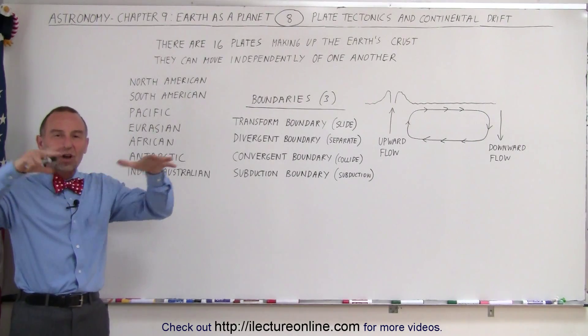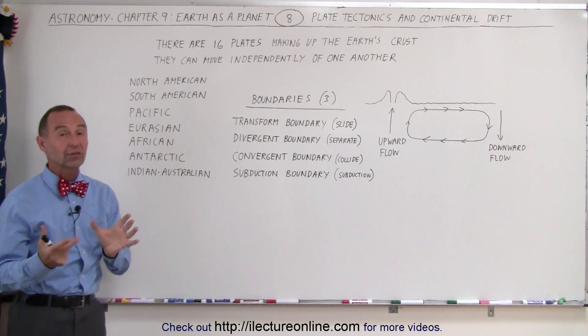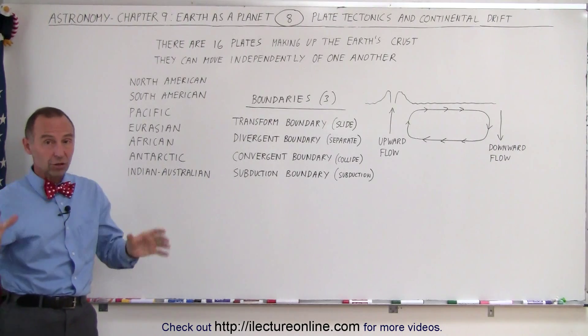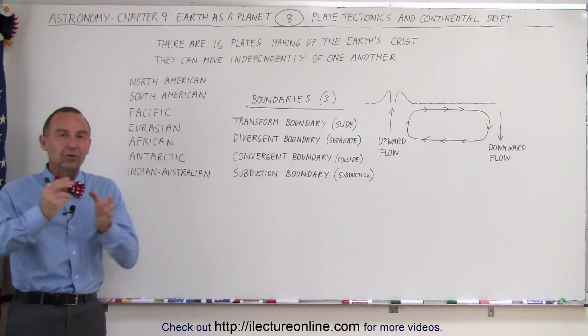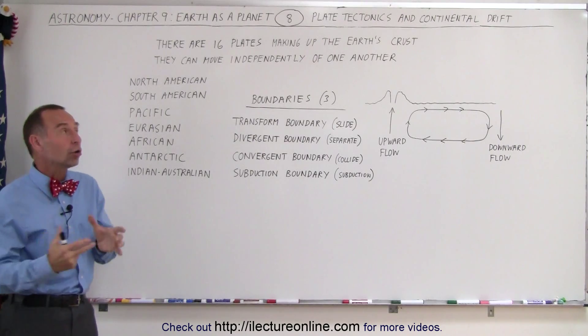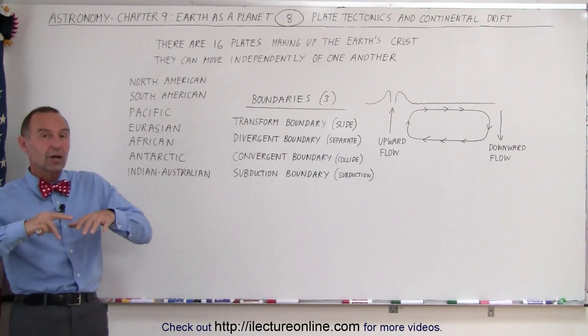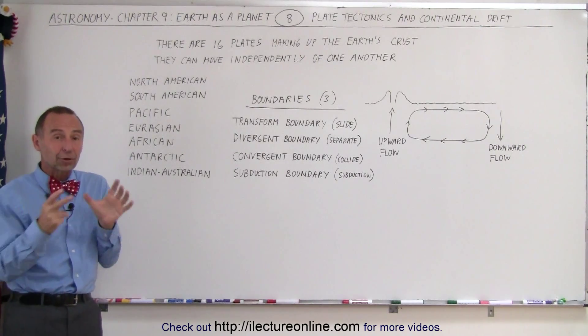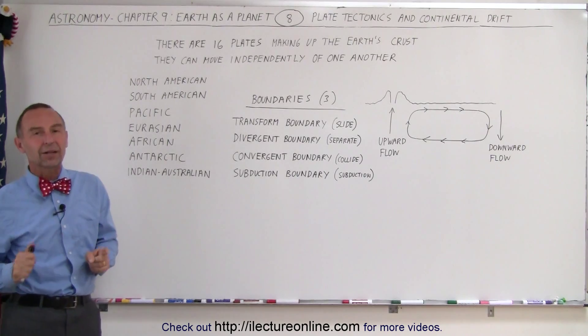The Earth's crust is not a solid piece all around the world. In some cases, planets do have a solid crust, but in the case of the Earth, the crust is divided into 16 large plates called continental plates. Therefore we talk about plate tectonics, because those plates can actually move independent of one another.